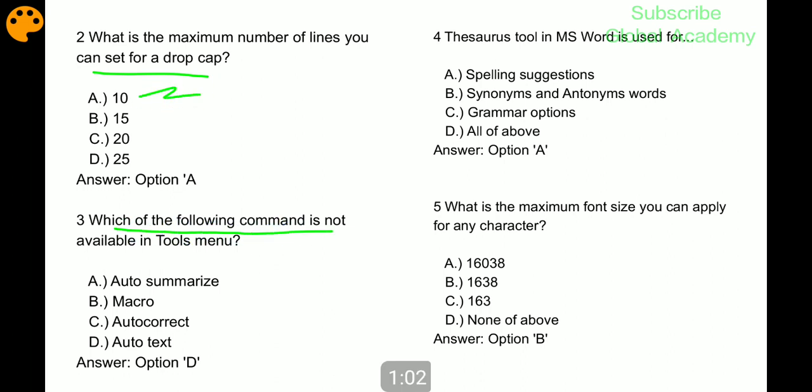Which of the following command is not available in tools menu? Auto text. Thesaurus tool in Microsoft Word is used for spelling suggestions. What is the maximum font size you can apply? 1638, B part.